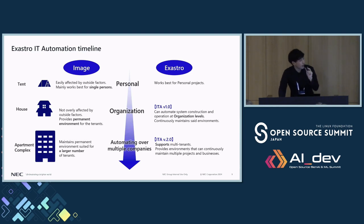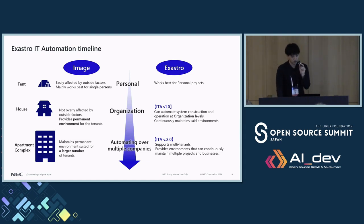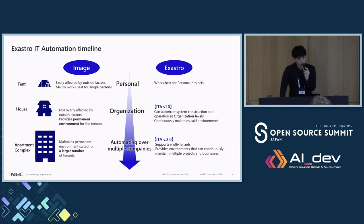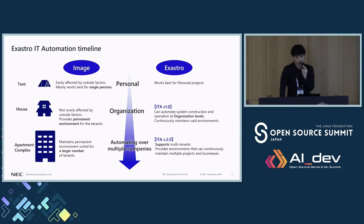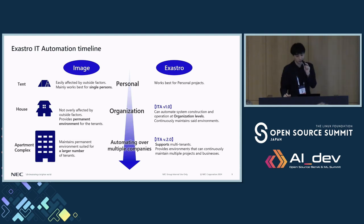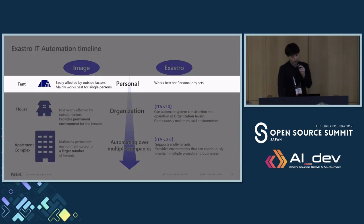Here is the very simple timeline of how ITA came to be. As I stated earlier, ITA was developed during the peak of the SI era business, before the cloud became popular. To help illustrate its evolution, we've created a metaphoric representation of the development. The different stages of Exastro's development can be explained using these three examples: tent, house, and apartment complex. It started with an engineer simply wanting to optimize a personal project he had been working on.